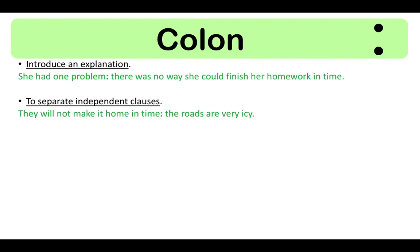The colon is used instead of a semicolon between the independent clauses. The reason for this is because the second sentence explains the first — they will not make it home in time, and the reason is because the roads are very icy. An example of a colon used to introduce an example is: 'If she was going to make the cake, then she needed all the ingredients, for example flour, butter, eggs, and milk.'